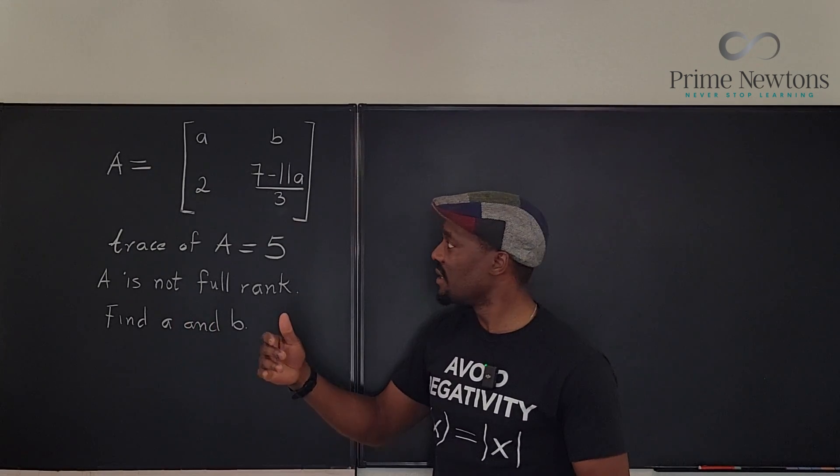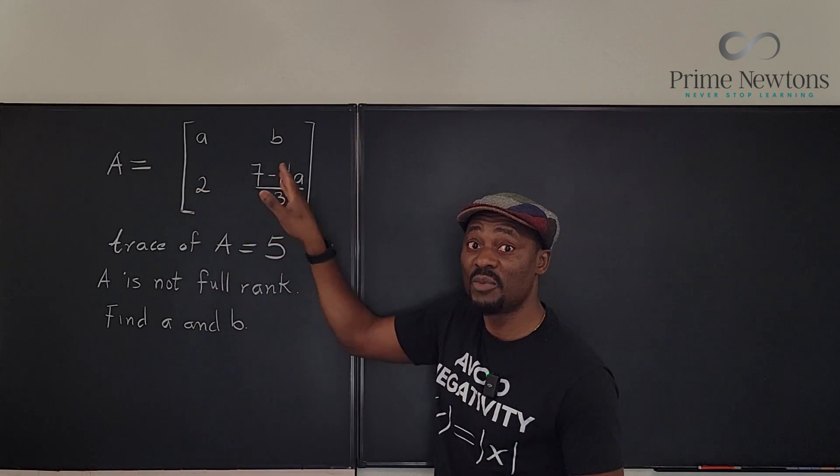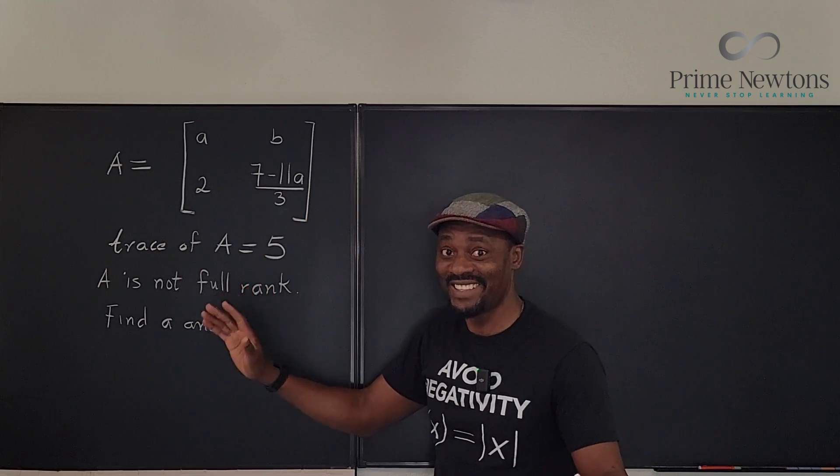Well, it means that the columns of a are not linearly independent. That is one is a scalar multiple of the other. It's just basic like that.